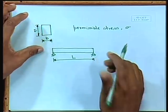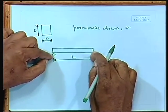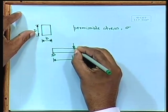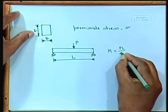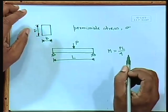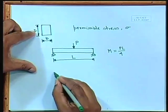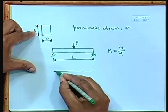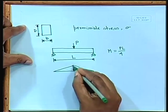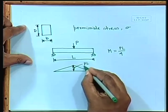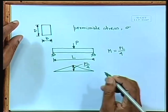We have to resist this moment by providing appropriate dimensions B and D. B is generally governed by the wall thickness — typically 250 mm (the width of a brick). Sometimes it may be a little more, but generally we keep it at 250 mm. Since B is fixed, we need to determine D — the depth — which is governed by the bending moment.